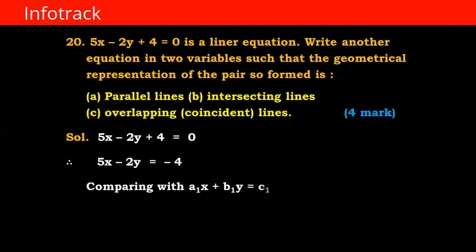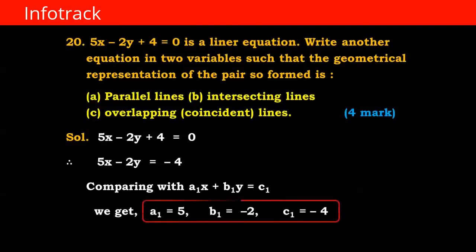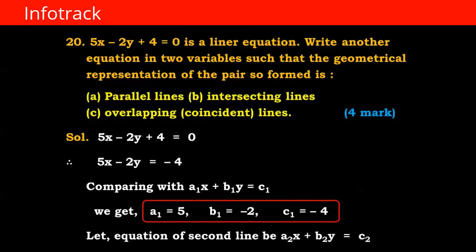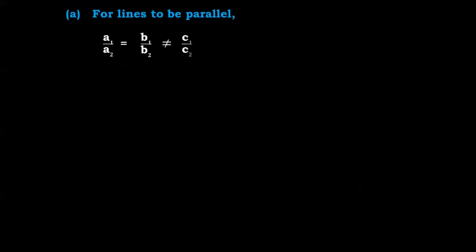Comparing with a1x + b1y = c1, we get a1 = 5, b1 = -2, and c1 = -4. Let the equation of the second line be a2x + b2y = c2. For parallel lines, the condition is a1/a2 = b1/b2, which is not equal to c1/c2.